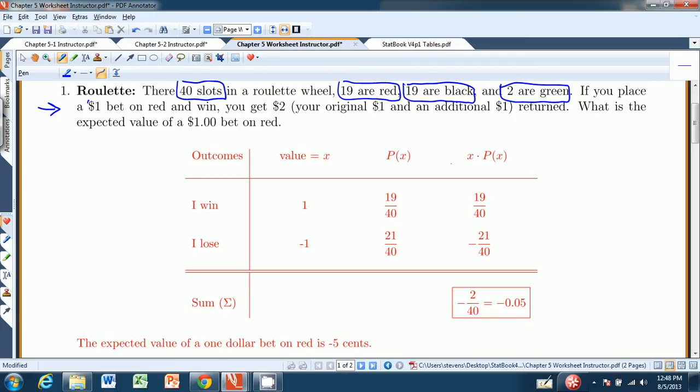And it turns out that there are 40 slots: 19 are red, 19 are black, and 2 are green. And if you place a $1 bet on red and win, if it comes up red, you get $2. But one of those is your original dollar. And if it doesn't come up red, then they keep the $1.